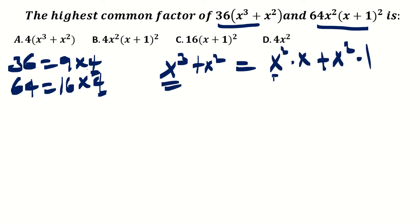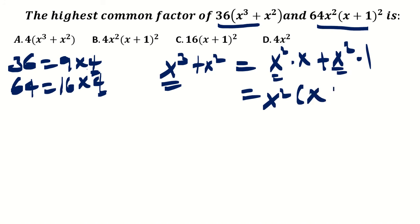In x³ there is x², and x² by itself is x² times 1, just to factorize. Now extract x² as a common. When you take out x² as the common factor, what's left? x plus 1 is left. When x² comes out, x plus 1 remains.